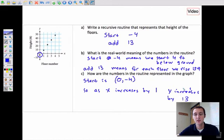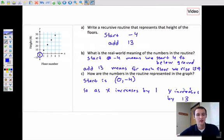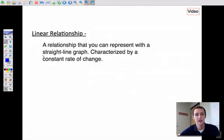This is what's called a linear relationship. A linear relationship is one that you can represent with a straight line graph. If you look back at this one, those points on this graph do indeed make a straight line, so it's linear. It's also characterized by a constant rate of change. In the previous example there, we had add 13, and that was for each floor. For each one floor that you go up, you go up 13 more feet. It has a constant rate of change.